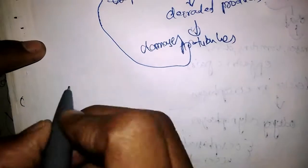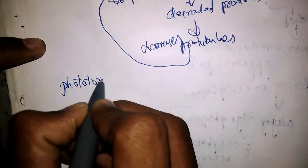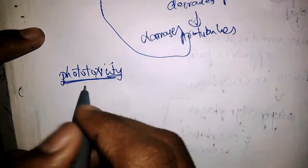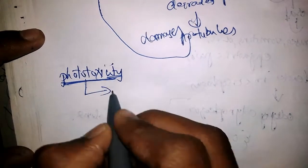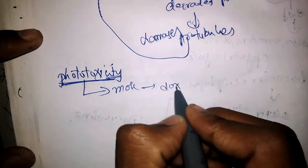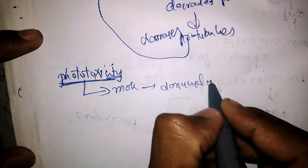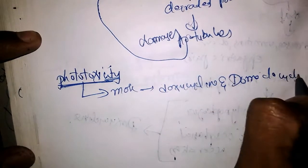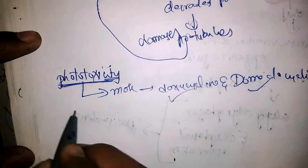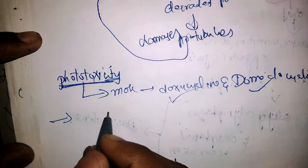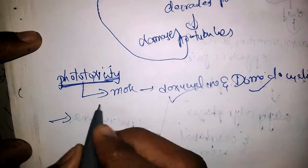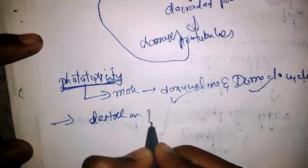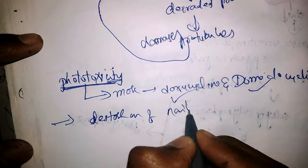Phototoxicity is more common with doxycycline and demeclocycline. Distortion of nails sometimes takes place as well.